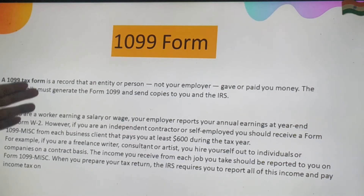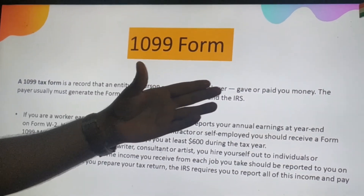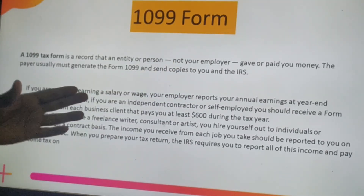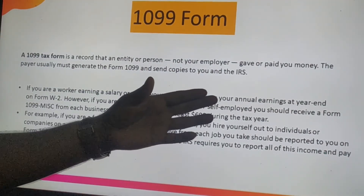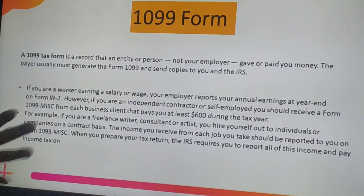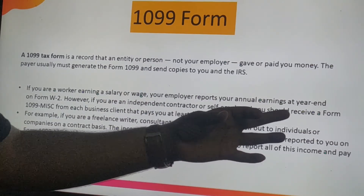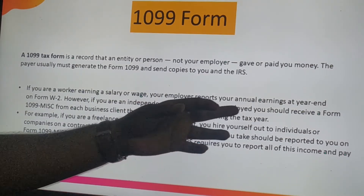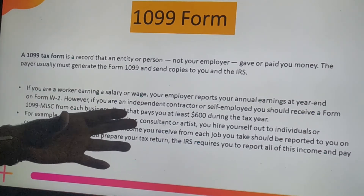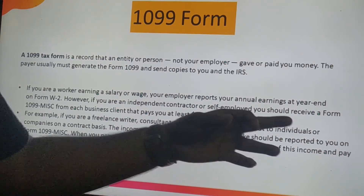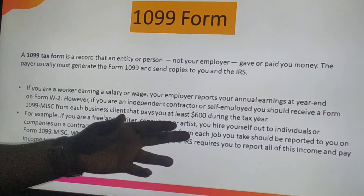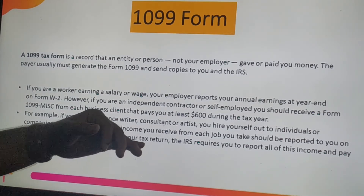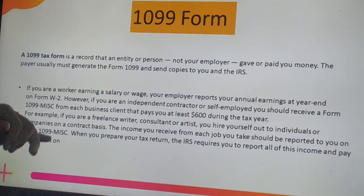A 1099 tax form is a record that an entity or person — not your employer — gave or paid you money. The payer must generate form 1099 and send copies to you and the IRS. If you are an independent contractor or self-employed, you should receive a form 1099-MISC from each business client that pays you at least $600 during the tax year. For example, a freelance writer, consultant, or artist hired on a contract basis should receive a 1099 for each job, and the IRS requires all this income to be reported and taxed.